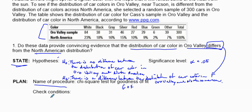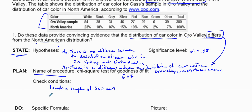Now we check our conditions. Was there a random sample? Yes — a random sample of 300 cars, as stated. Next, we need to find our expected values and check that all expected values are greater than or equal to 5. I'm going to use my calculator. Since this is categorical data and we're comparing to a North American distribution, we'll do a goodness of fit test.